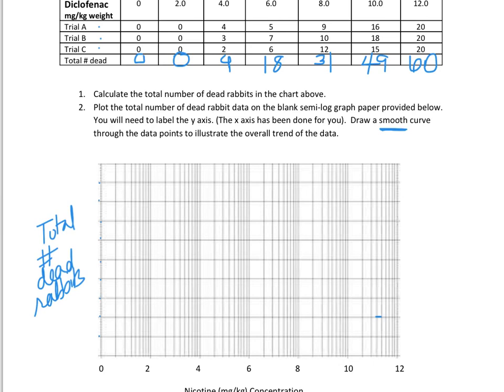Let me show you what not to do. A common mistake is to put the exact data values on the y-axis — so if you put nine, eighteen, thirty-one, forty-nine, and sixty as your y-axis labels, that would be absolutely wrong. I've seen students do this a lot. This is not correct whatsoever, so I'm going to reverse those numbers away because they are not right.